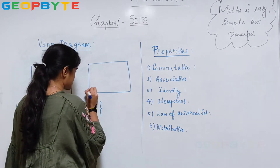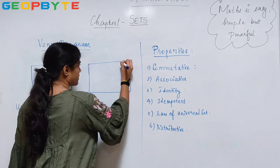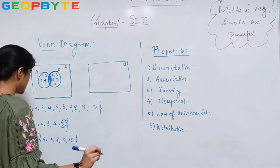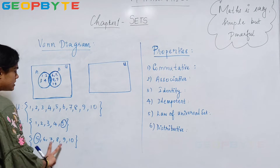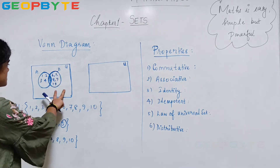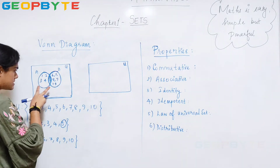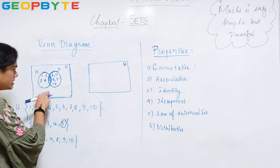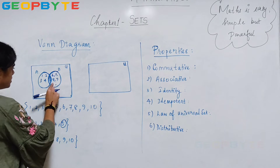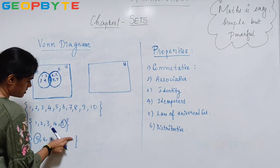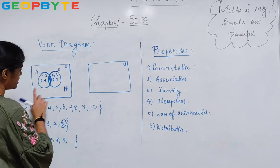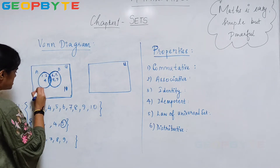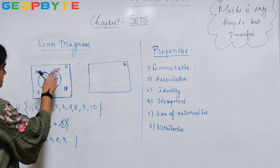Now I will give you another example. If this rectangle box is my universal set, there is no condition that all the elements in the universal set should be included in set A and B. There can be some elements which are not included in set A and B. For example, if 10 is not included then it is outside. If 3 is not included in set A then it will be outside the circle.